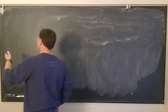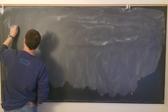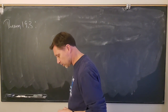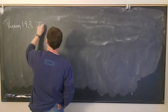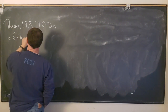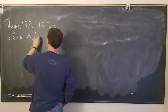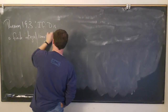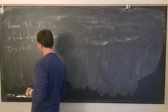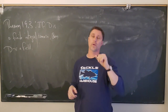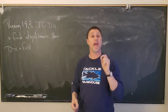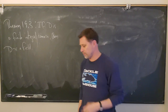Here is a fun fact — let's call this Theorem 19.3. If D is a finite integral domain, then D is a field. So we know that fields are always integral domains. It is not true that every integral domain is a field, but this theorem says every finite integral domain is a field, and this proof is just fun.